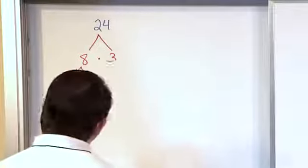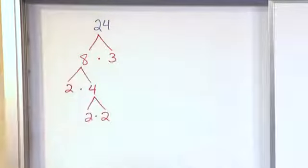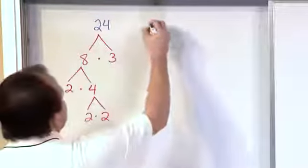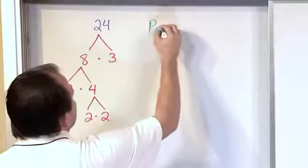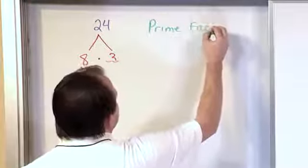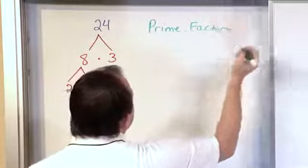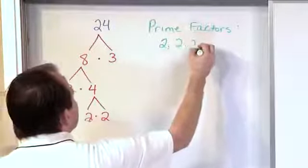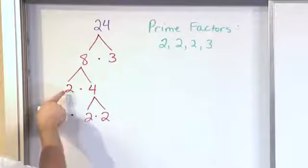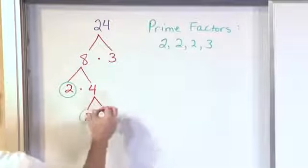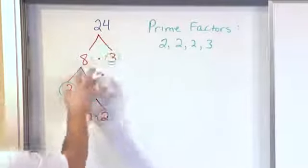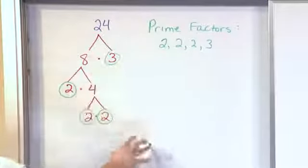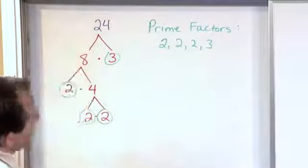Now we want to write down the answer. Since we were trying to find the prime factors of 24, what we found is that the prime factors of 24 are 2, 2, 2, and 3. You list everything at the bottom of every branch of the tree. Every number at the bottom of the tree is what we write down.